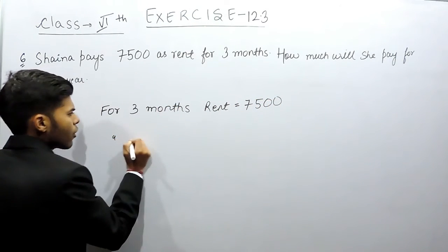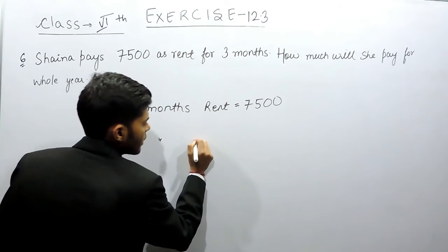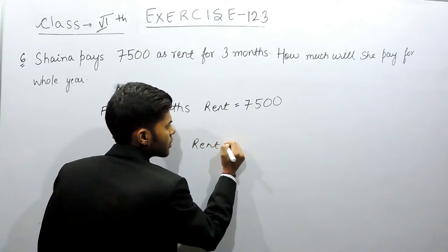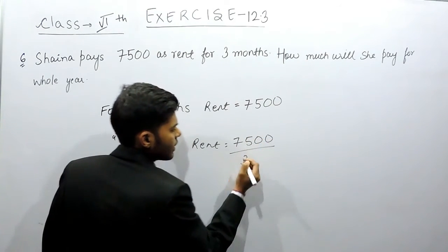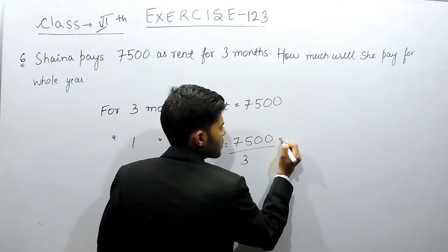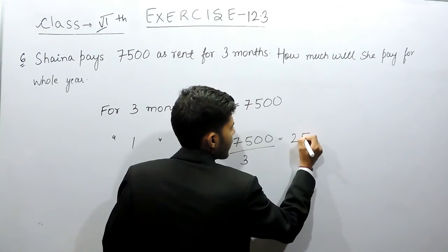Therefore, for 1 month, rent will be equals to 7500 by 3. So that will be equals to 2500 rupees.